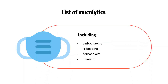There are a number of mucolytics available to prescribe in the UK. These include carbocysteine and erdostine, both available as capsules. Carbocysteine is also available as an oral liquid. Two other types — Dornase alpha and mannitol — are inhaled but are usually only prescribed for people with cystic fibrosis.